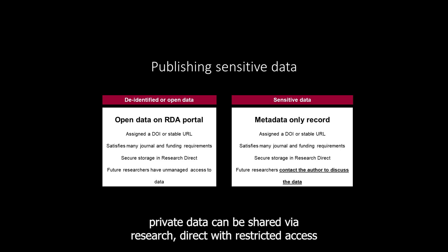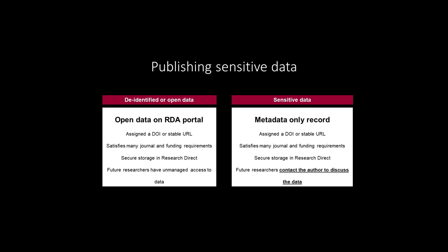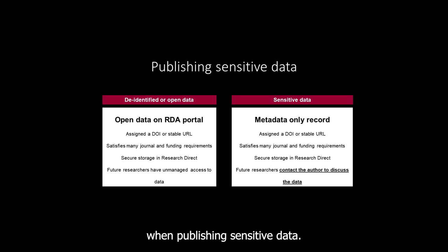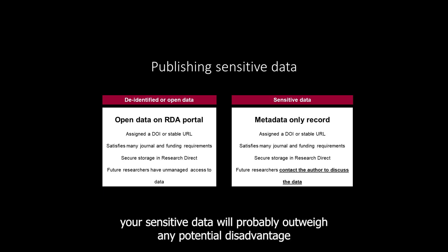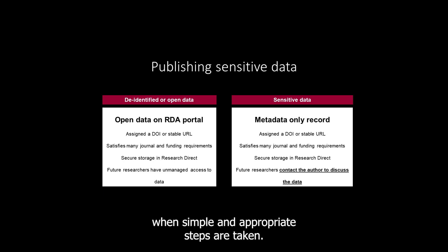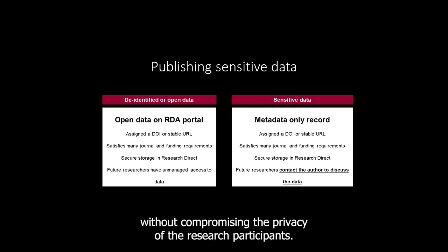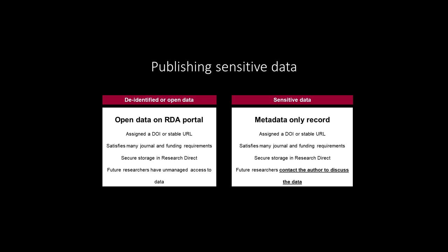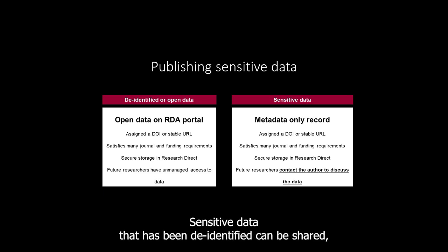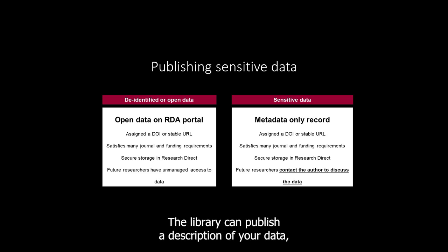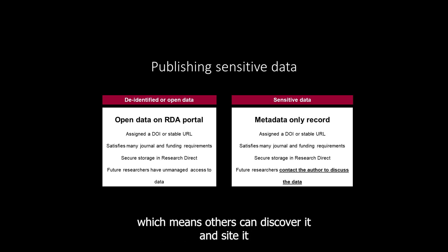Sensitive or private data can be shared via Research Direct with restricted access so that you can consider requests for your data against your criteria. When publishing sensitive data, the advantages will probably outweigh any potential disadvantages when simple and appropriate steps are taken. Sensitive data can often be anonymised and de-identified so that the value of the data collected can be realised without compromising the privacy of the research participants. Researchers can also place conditions around access to published data. The library can publish a description of your data, which means others can discover it and cite it without making the data itself openly accessible.